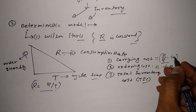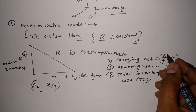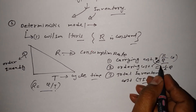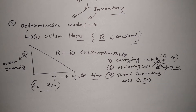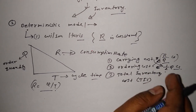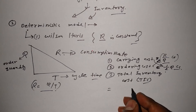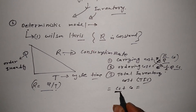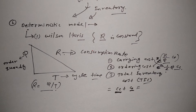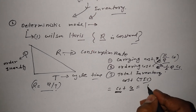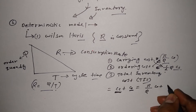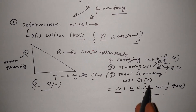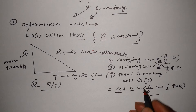Just to clarify: ordering cost is R/Q × C₀, and carrying cost is (1/2)Q × CC. Carrying cost is denoted by CC and ordering cost is denoted by C₀. Total inventory cost (TIC) = (R/Q) × C₀ + (1/2)Q × CC.